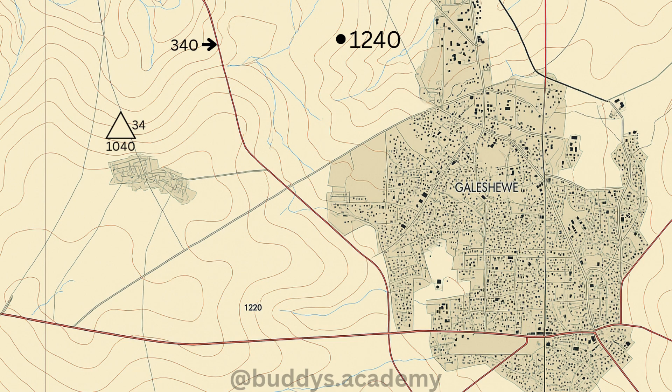Hey there guys, Buddy here. There are four main ways to find height on a map. The first being a trigonometrical beacon, the second being a spot height, the third being a benchmark, and the fourth being your contour lines.